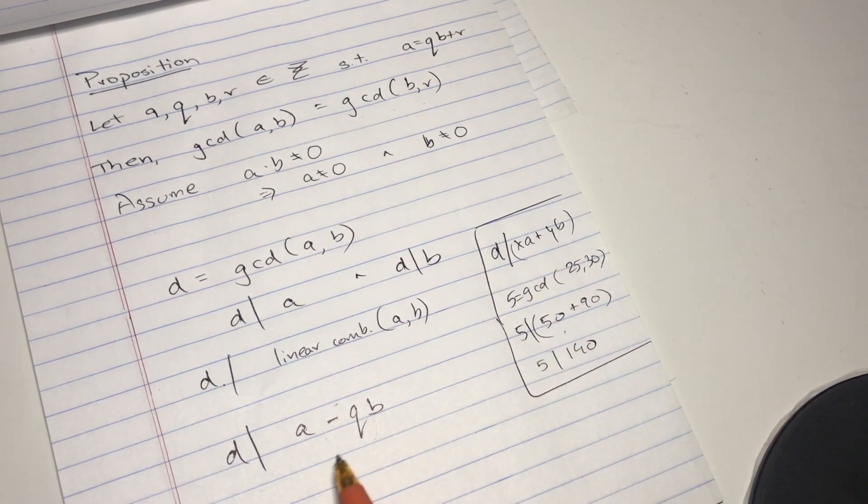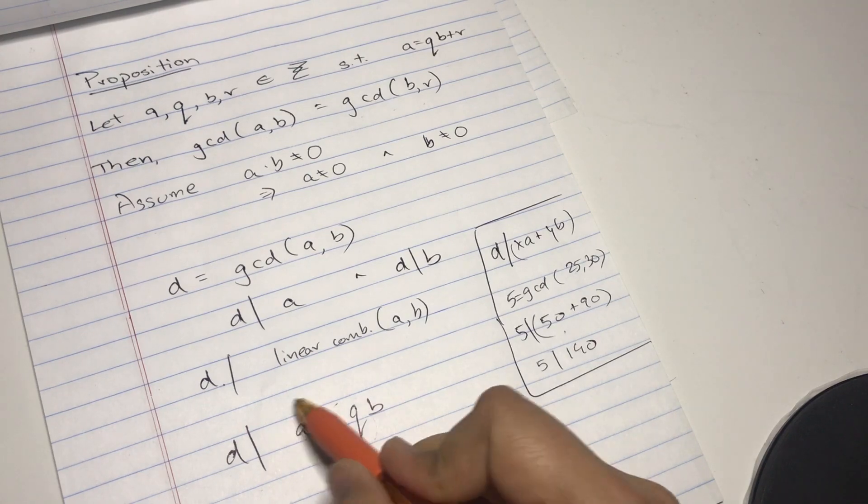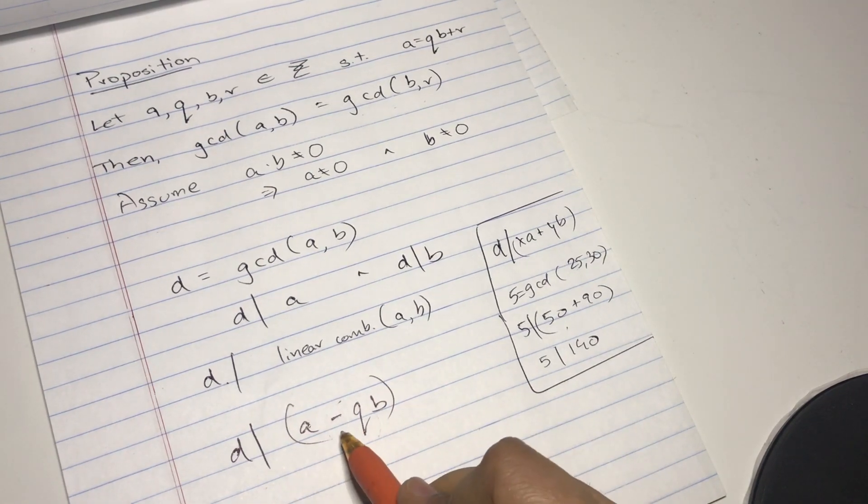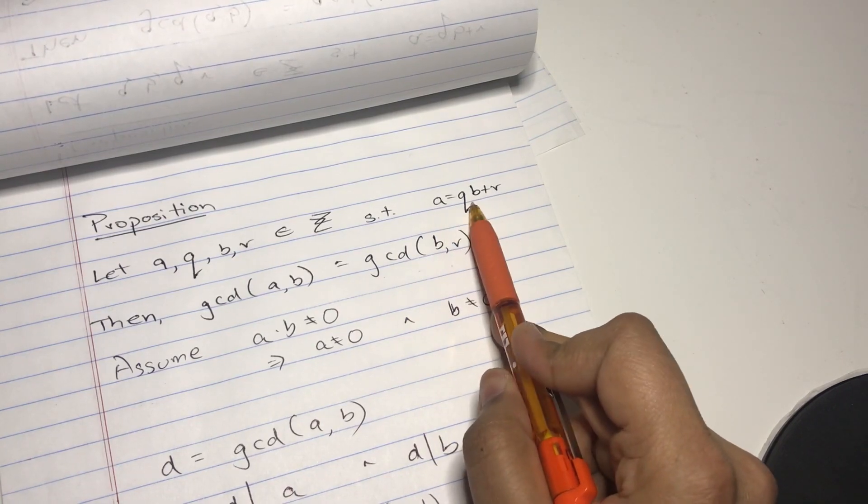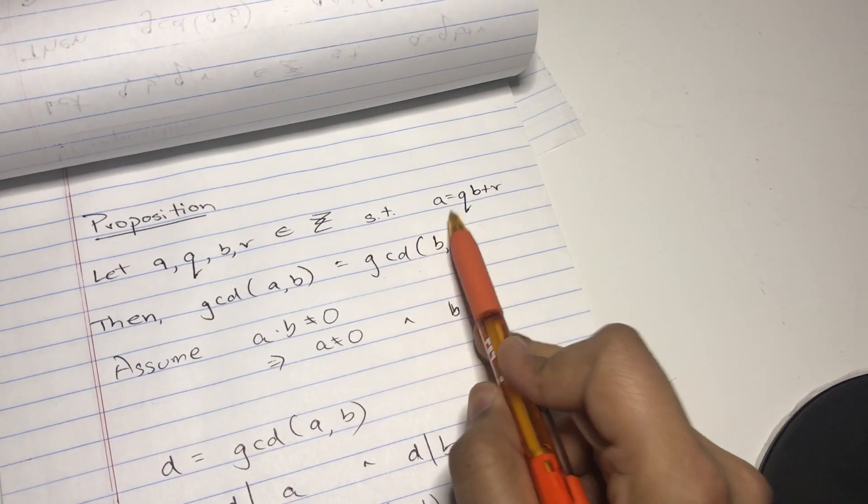We chose this number specifically because this actually equals r, right? Because if the qb comes on this side, r equals a minus qb, which is actually what we have here. So we know d divides r.